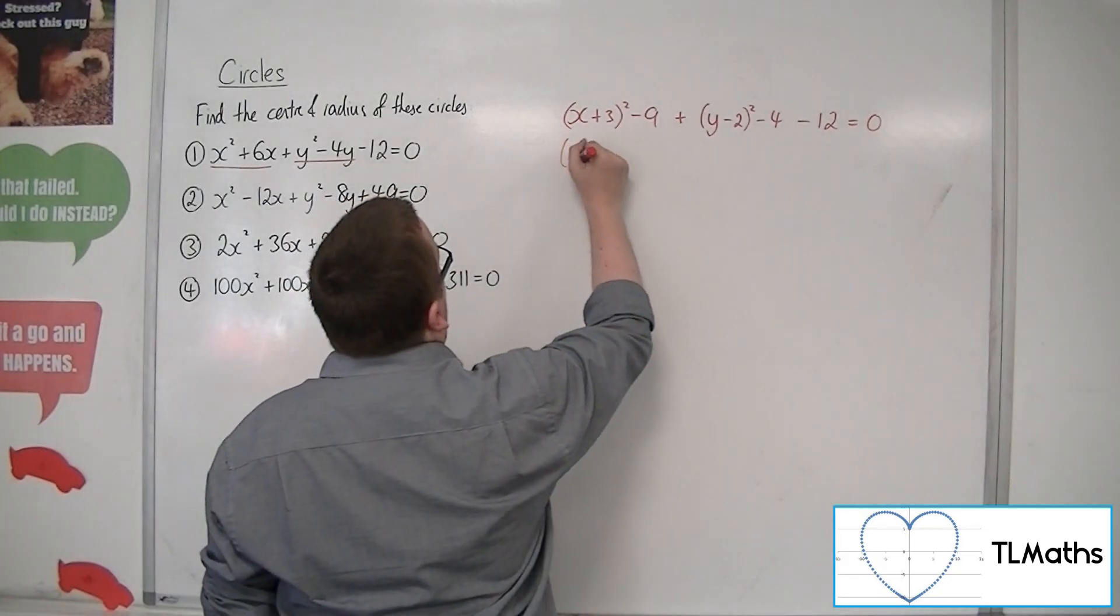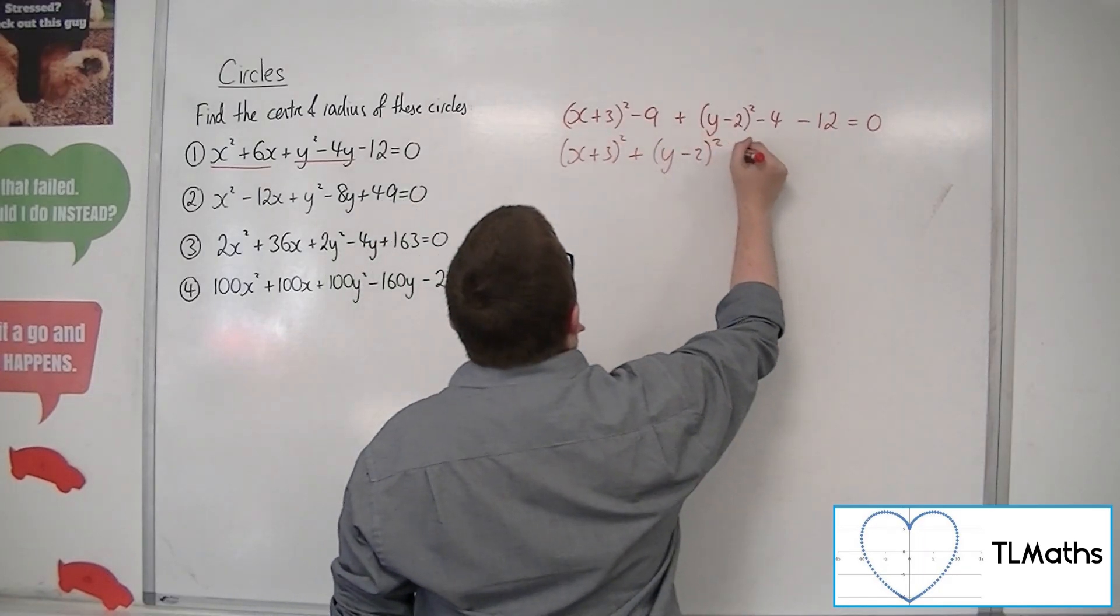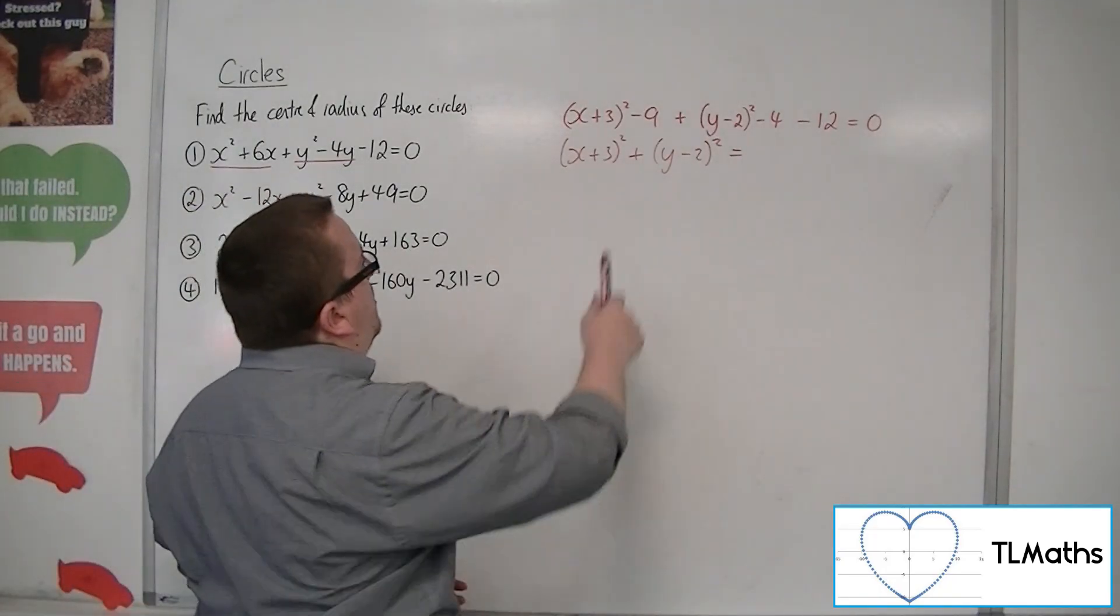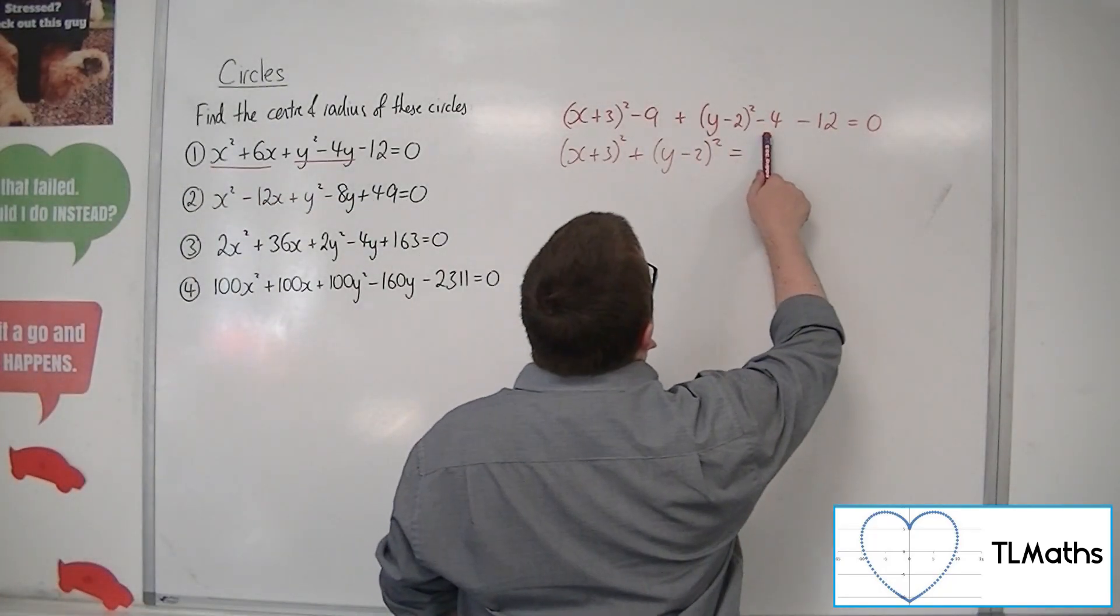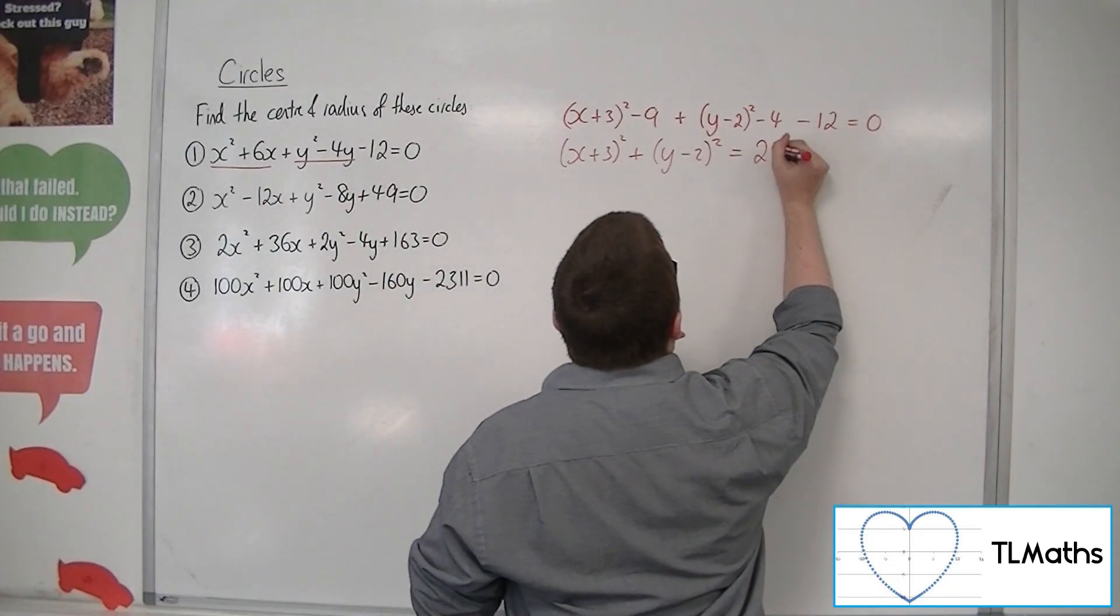So if I write both of the brackets parts first, what I've got left can be thrown onto the right hand side. So we've got minus 9, take away 4, so minus 13. Take away 12 is minus 25. So add 25 to both sides.